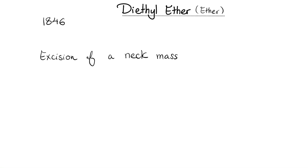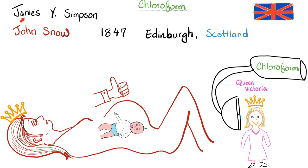Next, the story of chloroform — thanks to James Simpson and John Snow, the same person who also prevented a cholera epidemic in Britain. Chloroform is an inhaled anesthetic. Queen Victoria tried it while delivering her baby and it worked like a charm. This is probably the same baby who had hemophilia — if you want that story, watch my Hemophilia A video; her son actually had hemophilia B, but the story is in that video.